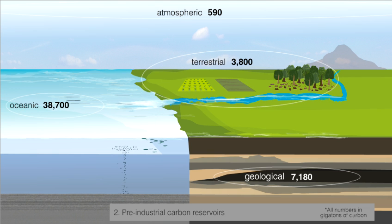The amount of carbon estimated to have been contained in the Earth's major carbon reservoirs prior to the year 1800 is reflected here. All figures are scientific estimates and are represented in gigatons, or billions of tons, of carbon.